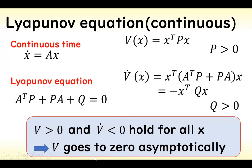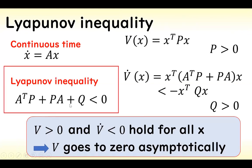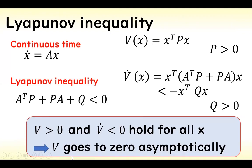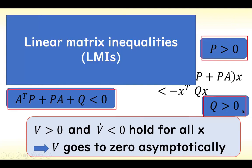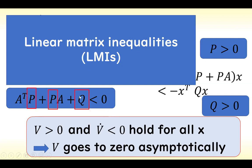Then these equations hold for all X and V goes to 0 asymptotically. In the case of the Lyapunov inequality, this inequality holds and V also goes to 0 asymptotically by these forms. The three inequalities form the linear matrix inequality, and we want to find P and Q which satisfy these inequalities. Then the system is asymptotically stable.